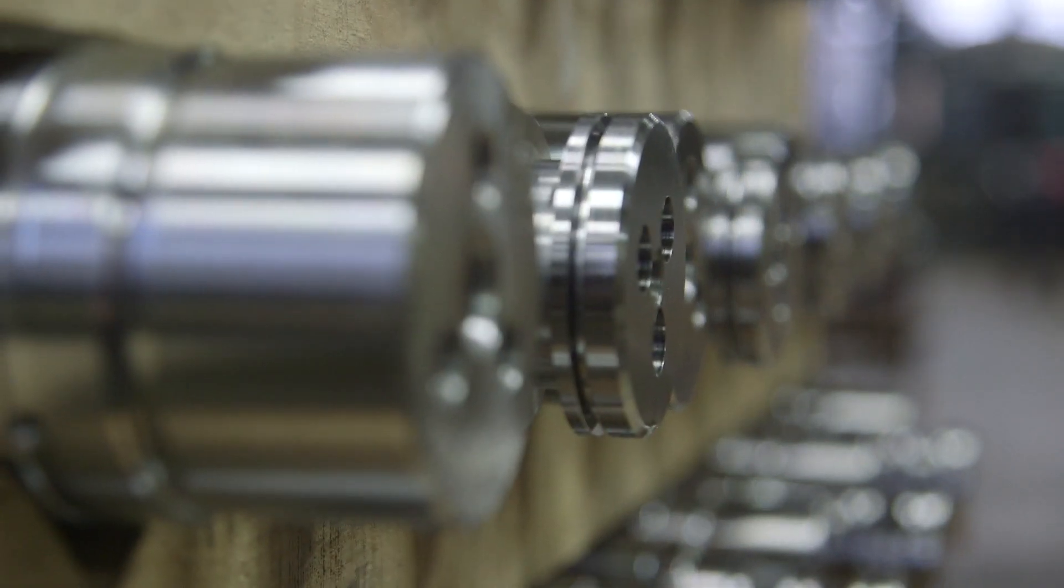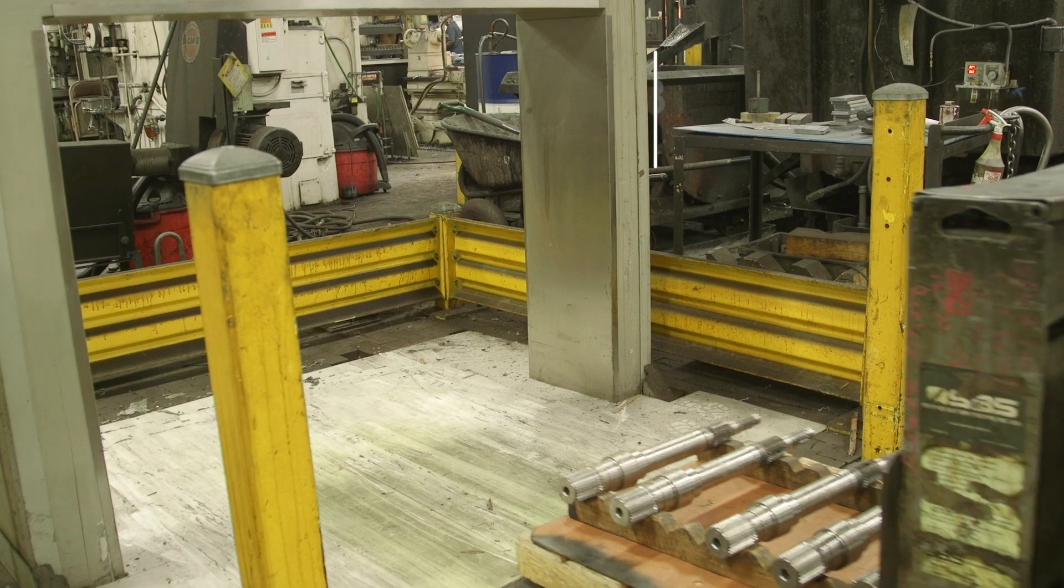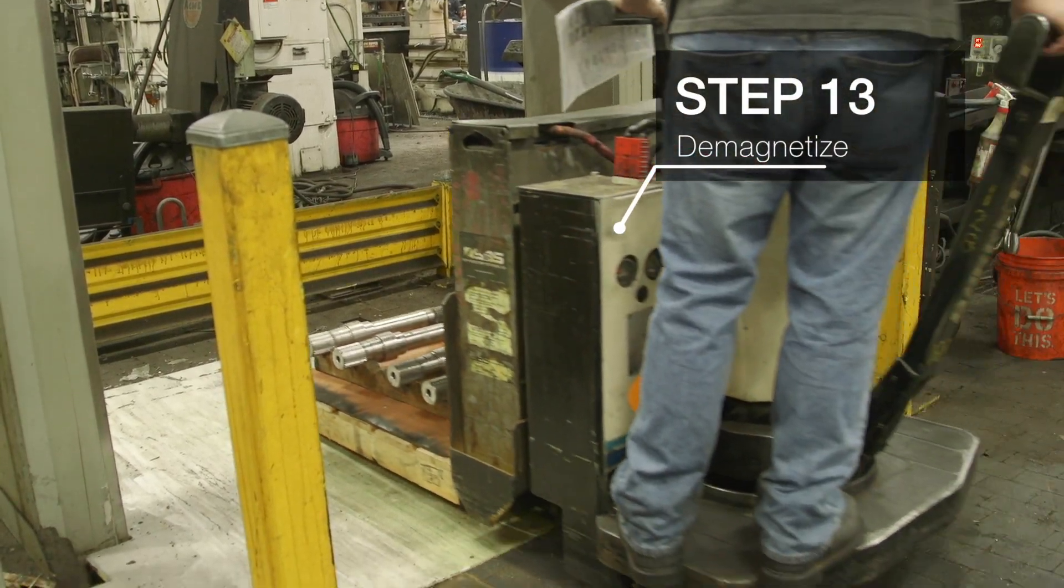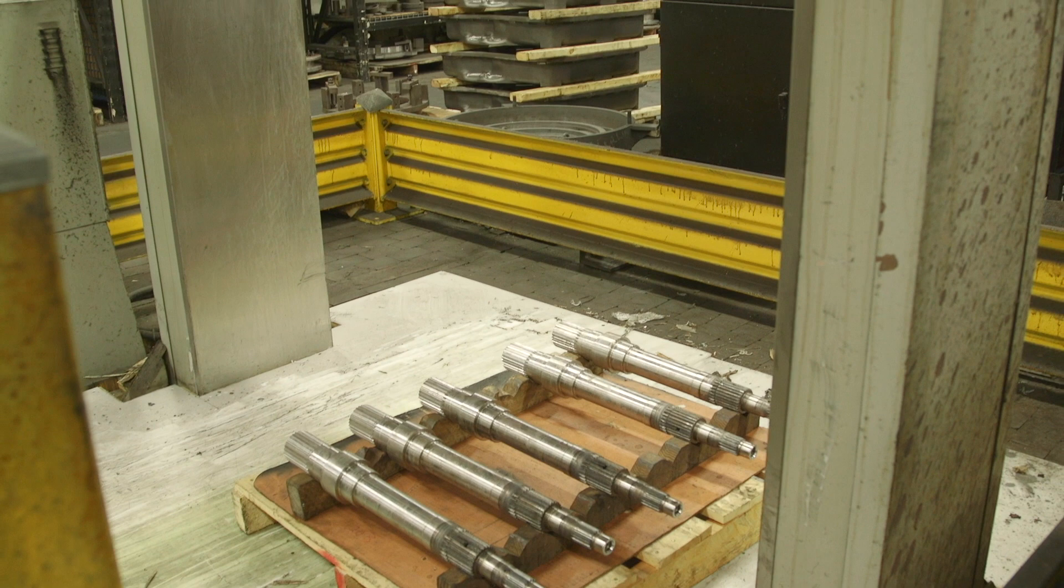Our raw steel has gone through many production processes on its way to becoming a shaft. One thing that can occur as a result is it becoming magnetized along the way. We demagnetize the shaft, helping all our component pieces to move efficiently.